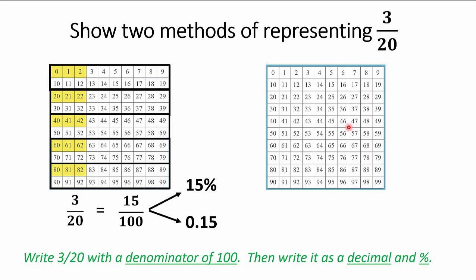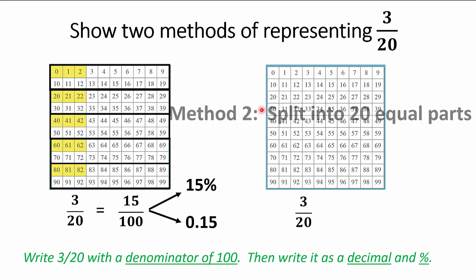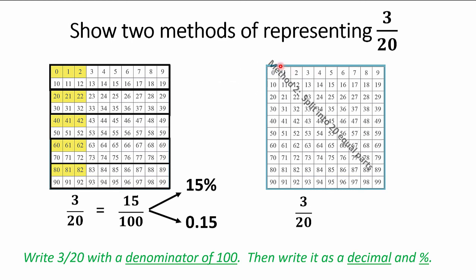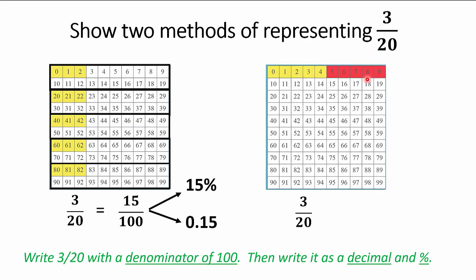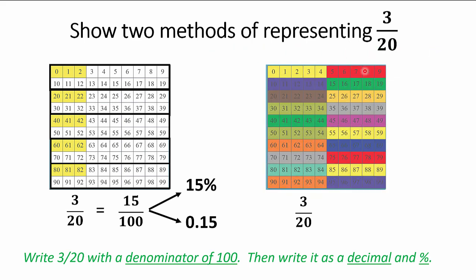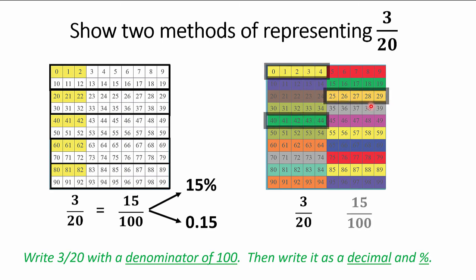Method two for three-twentieths: chop the whole grid into twenty parts. Splitting a hundred tiles into twenty sections gives five in each section. Now choose any three sections. Count how many little ones — 15 out of 100. Equal to three-twentieths.